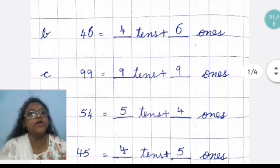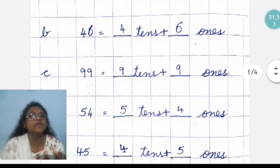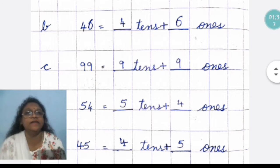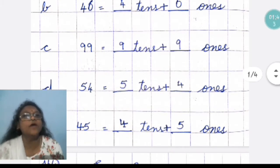Now, next number is 46. In this also, you have to write 6 ones. It is ones. So, you will write where? Right side. And 4 you will write on the left side. That is tens.